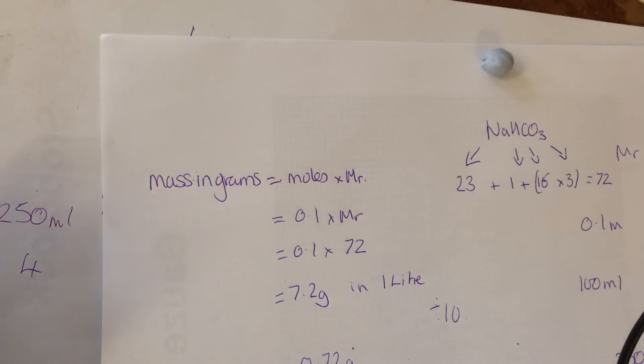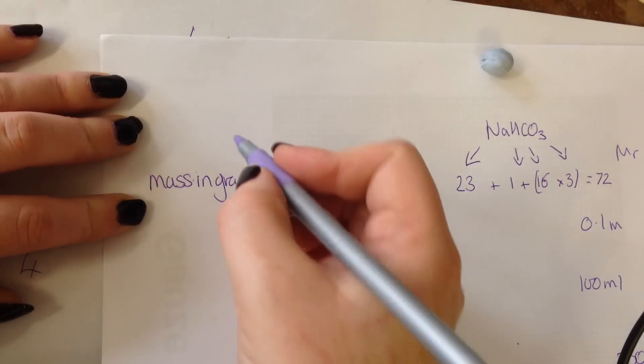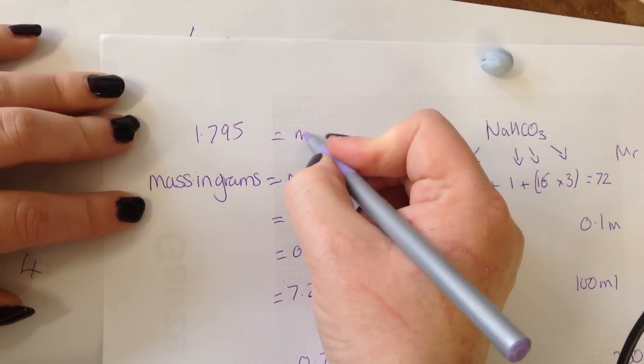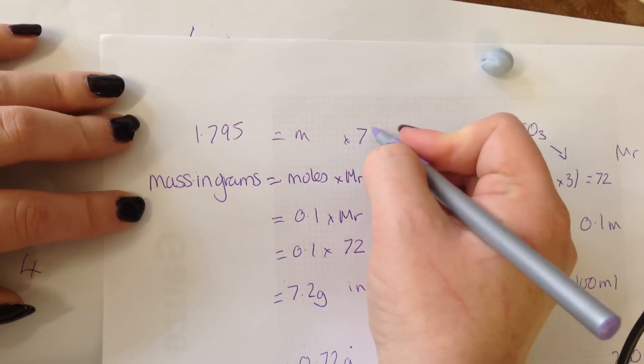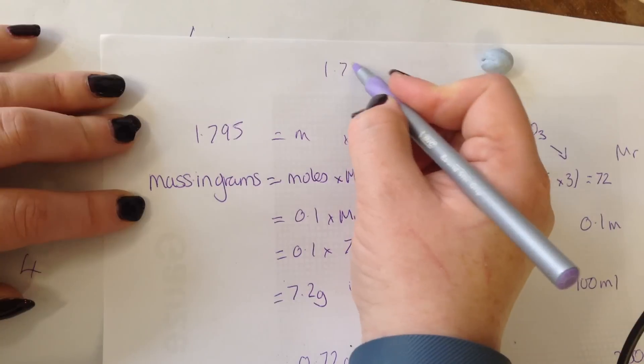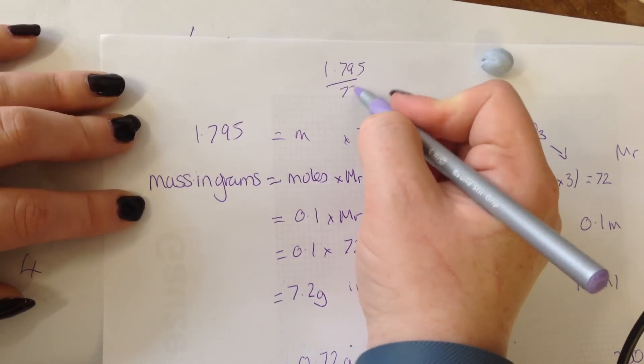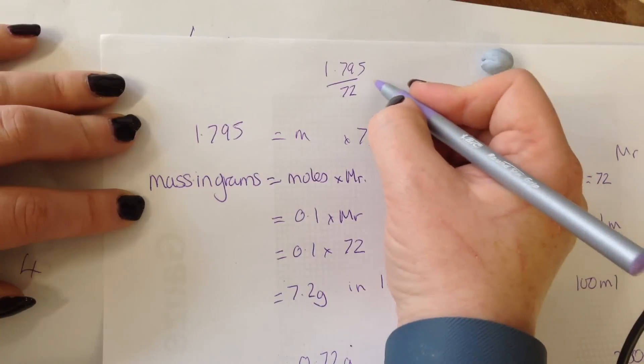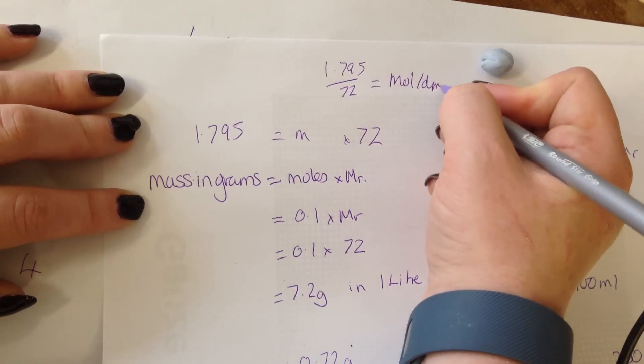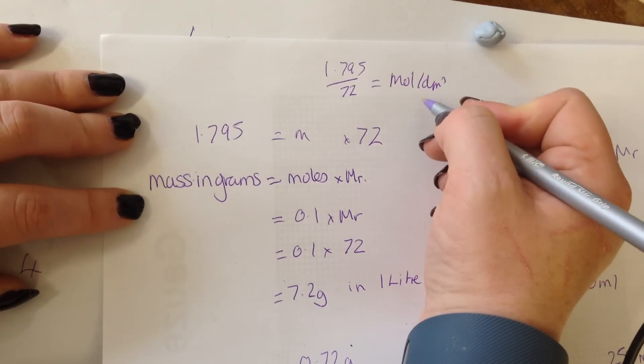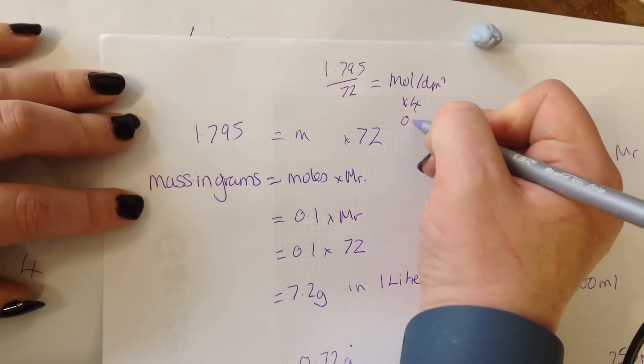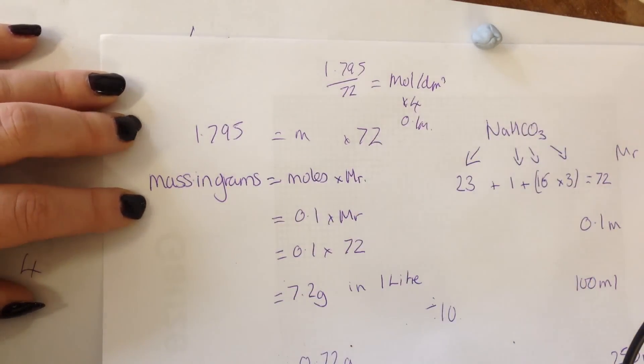If you don't like doing ratios, here's the equation that we started with. So the mass in grams is 1.795 equals the moles that we're looking for times 72, the MR. It's exactly the same. You do 1.795 divided by 72. That is going to give you the moles per decimetre cubed. But then because we dissolved it in 250 moles in liter, we need to times that by four, which will again give us 0.1 molar solution.